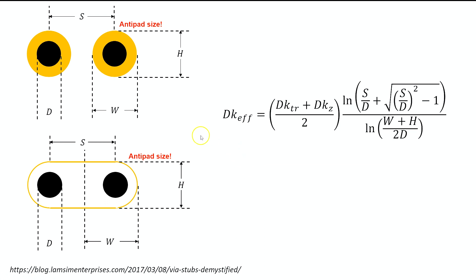There's an equation for differential vias — the vias on a differential pair — that you can use to get an εeff value. We looked at this in the context of back drilling, where we calculated the transit time to the bottom of a via stub to determine whether back drilling is needed to reduce stub length and increase the lowest resonance frequency. In this case we get the εeff value based on the anti-pad size, spacing between the two vias, via diameter, anti-pad width, and height. This equation models the two vias as a pair of rods and calculates the inductance and capacitance between them.